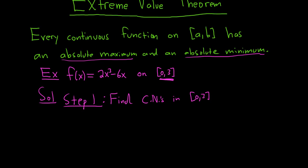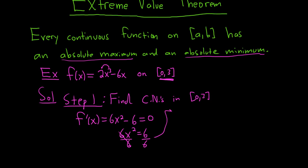To find the critical numbers, you take the derivative of the function and look to see where it's undefined or where it's zero. Taking the derivative here, we get 6x² minus 6. This is never undefined, so we set it equal to zero. Adding 6 gives 6x² = 6, dividing by 6 gives x² = 1, and taking the square root gives x = ±1. However, we only care about critical numbers in our interval, so negative 1 is not between 0 and 3. We only include 1, so 1 is our critical number.